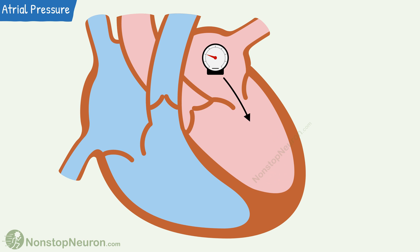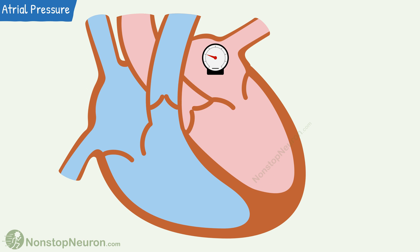So this completes the entire cycle. The next cycle begins with atrial contraction, which produces a rise in pressure as we have already seen in the beginning. This is how atrial pressure changes during a cardiac cycle.